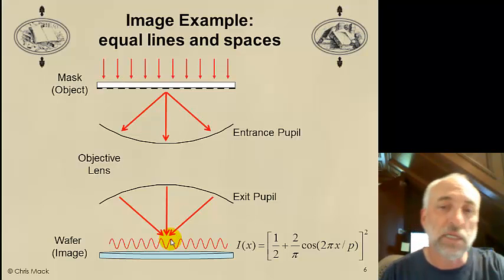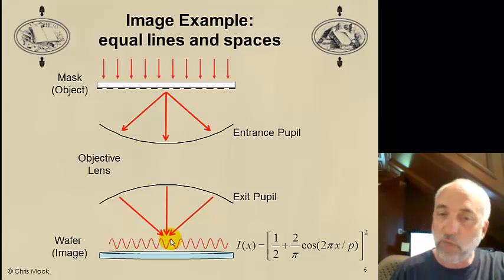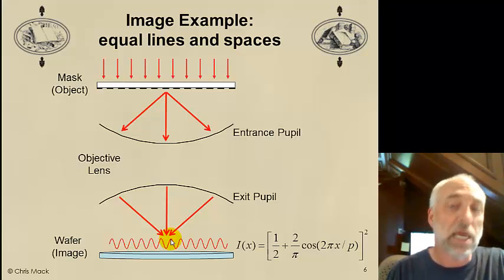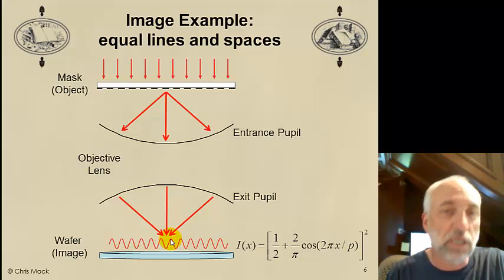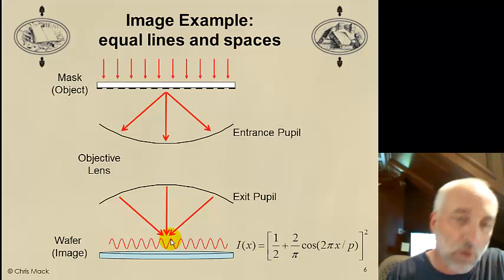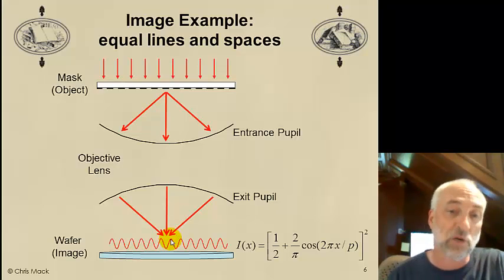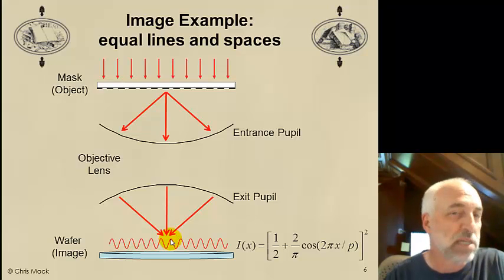And this is the actual intensity of light that our photoresist will see projected onto it because of the imaging of this particular mask pattern of lines and spaces with this particular lens. So we've worked out an imaging example. We could work out an example for an isolated space, but the mathematics become a little bit uglier. The nice thing about repeating patterns of lines and spaces is we get these discrete diffraction orders, so it's very easy to answer what does our image look like.